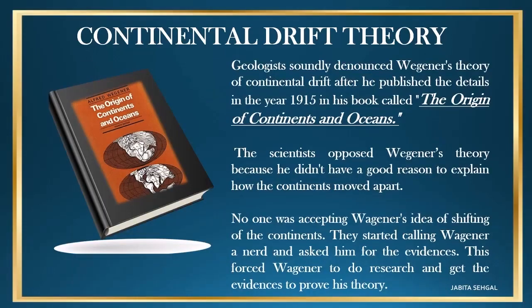It is heartbreaking that geologists soundly denounced Wegener's theory of continental drift after he published the details in the year 1915 in his book called The Origin of the Continents and Oceans. The scientists opposed Wegener's theory because he didn't have a good reason to explain how the continents moved apart. No one was accepting his idea of shifting of the continents, and they started calling Wegener a nerd and asked him for evidence.